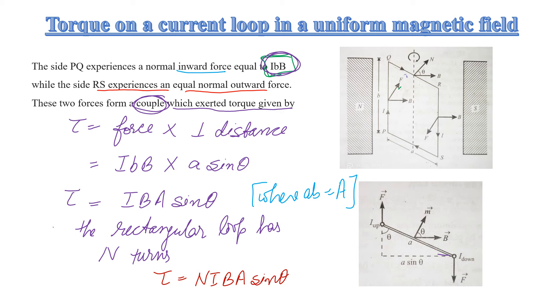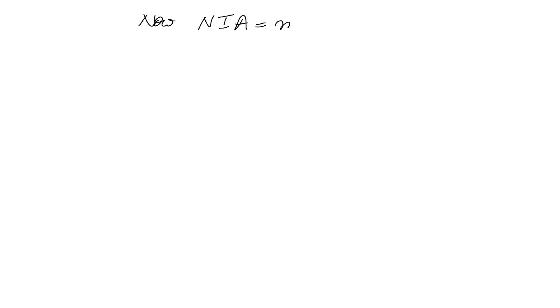The total torque is n I B A sin theta. Now, we define n × I × A as equal to small m, the magnetic moment of the loop. Here, n is the number of turns, I is the current flowing through them, and capital A is the area. So n I A = m, the magnetic moment.